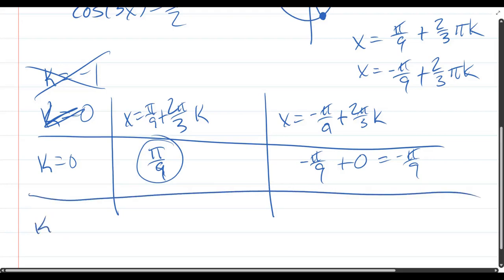k equals 1. Pi over 9 plus 2 pi over 3 times 1. 2 pi over 3 is 6 pi over 9. Multiply both by 3, add 1. That's 7 pi over 9. That still is smaller than pi.